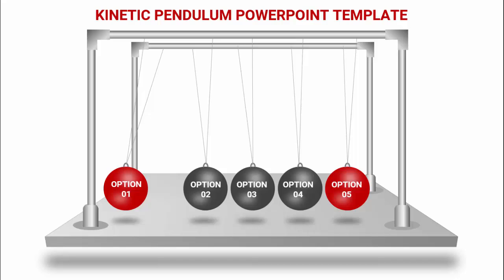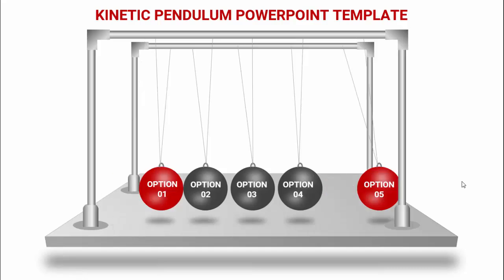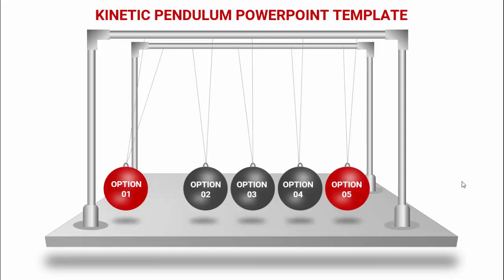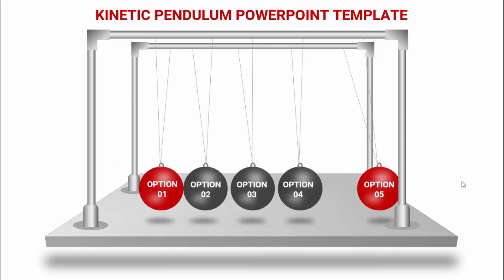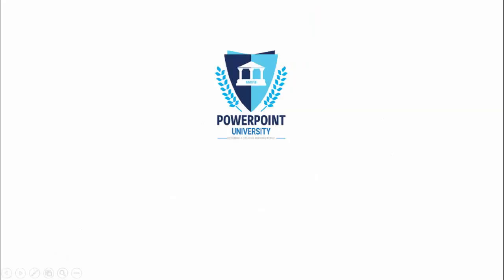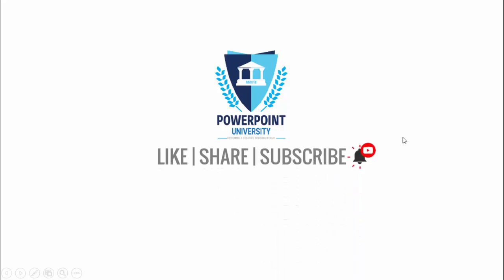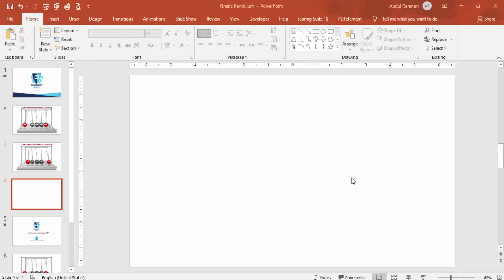In today's tutorial I'm going to show you how to create a kinetic pendulum PowerPoint template. I have created this complete design in PowerPoint — a platform where spheres or balls are hanging. When I press the down arrow key, the ball on the left hits the middle one and then the right one moves. I have used Office 2019, however older versions can also use this template. Please subscribe to PowerPoint University and enable the bell notification.